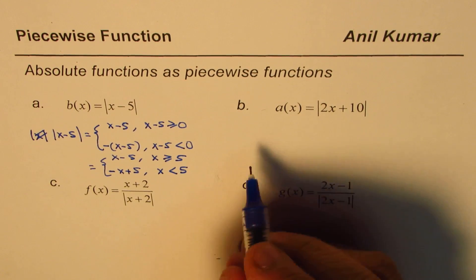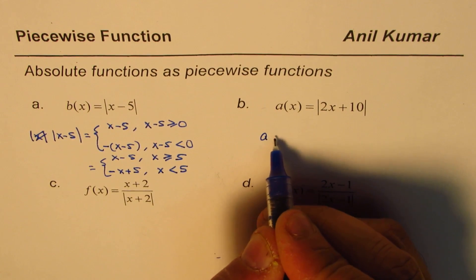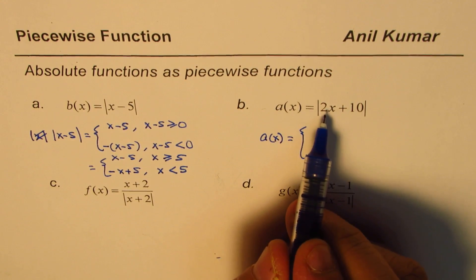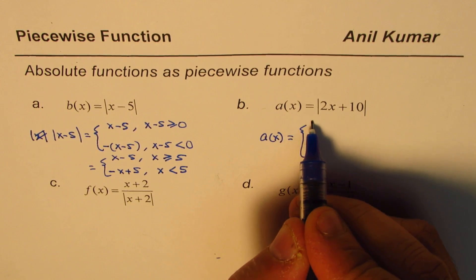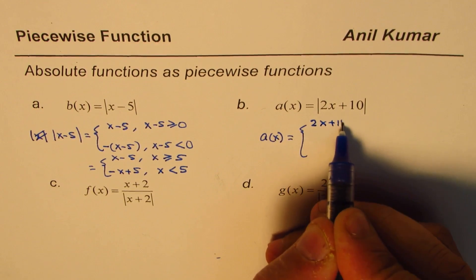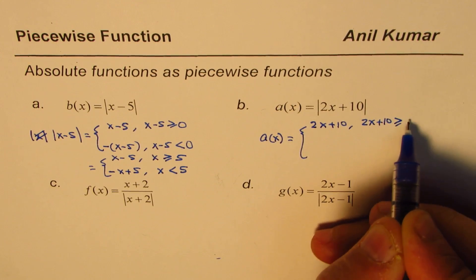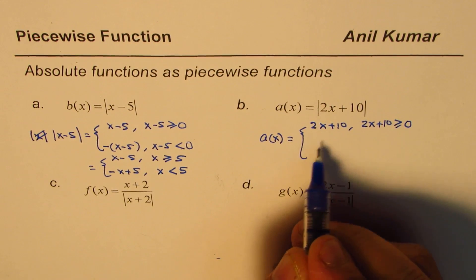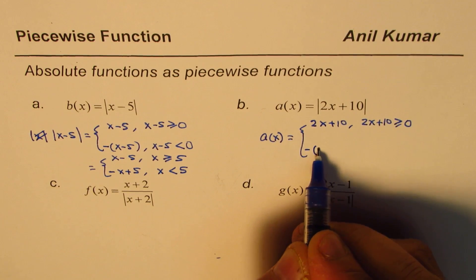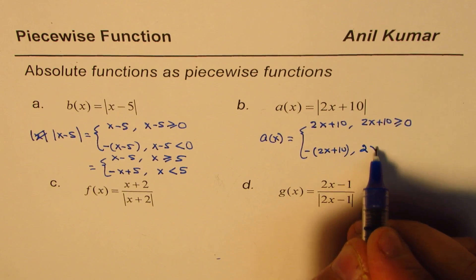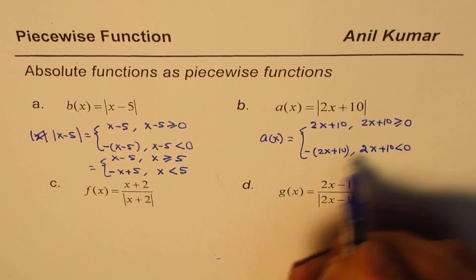So let's do the next one. a(x) can be defined as equals to this absolute value of 2x plus 10. So we could write this as 2x plus 10 when 2x plus 10 is greater than equal to 0 when it is positive. However if it is negative we'll make it negative, which is 2x plus 10 is less than 0.